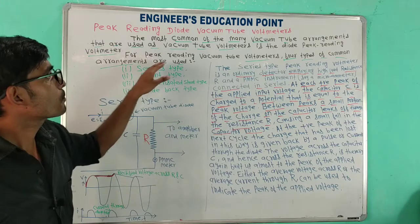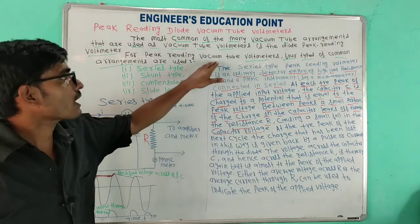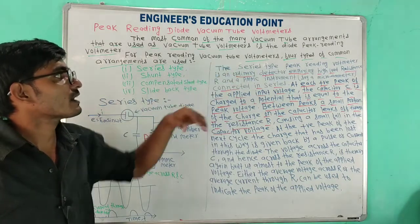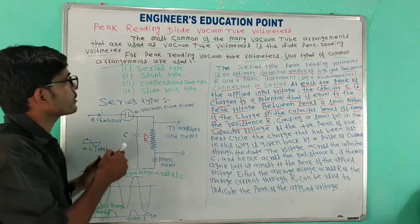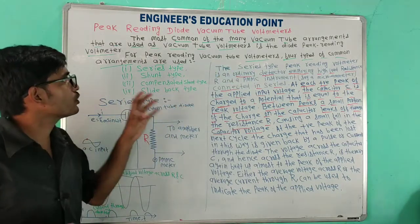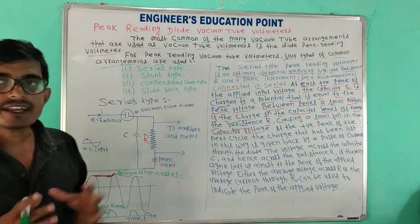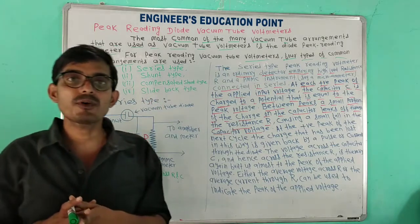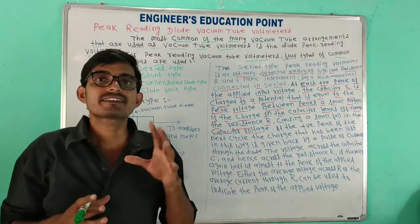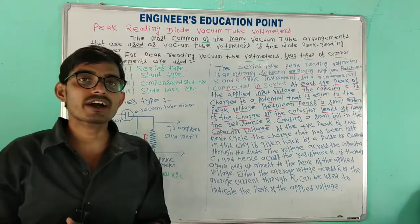For the peak reading vacuum tube voltmeter, four types of common arrangements are used.